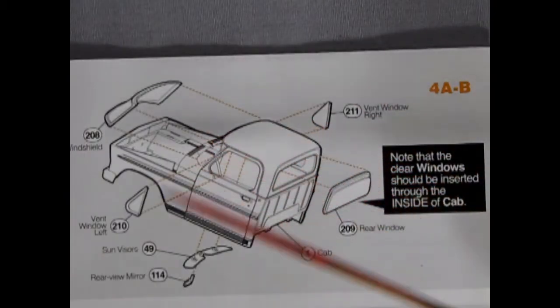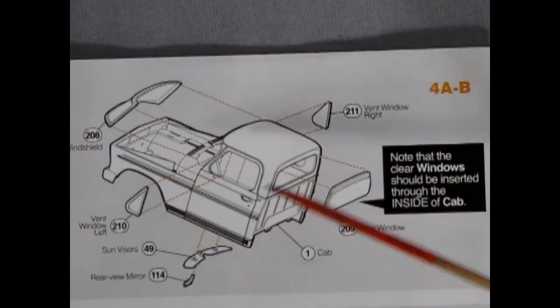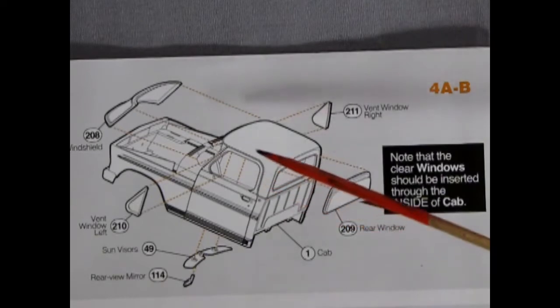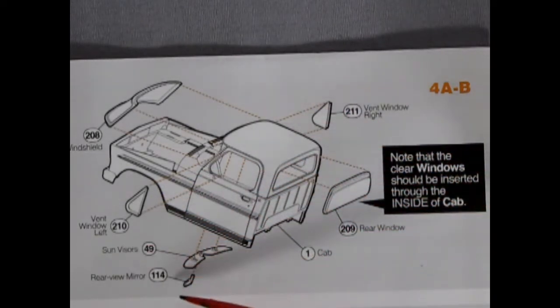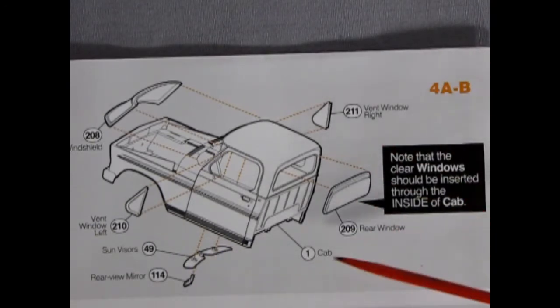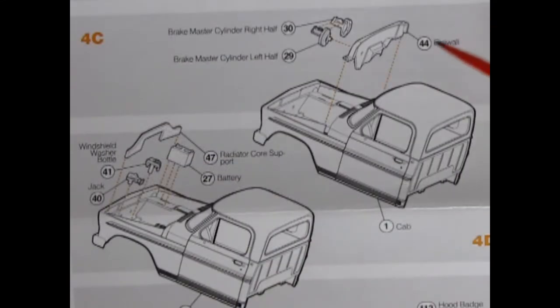Now you're going to have to paint your cab first which we can see in our painting instructions toward the back but once that is done you can add in all your mirrors and windows and the sun visors. Note that the clear windows should be inserted through the inside of the cab. And we can complete our cab by taking our master cylinder right and left hand side gluing them together and gluing them to the firewall which then glues into the cab.